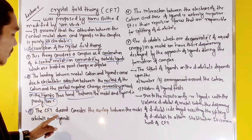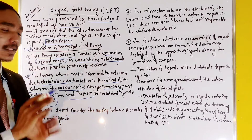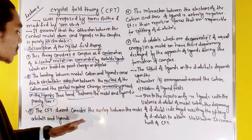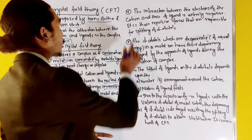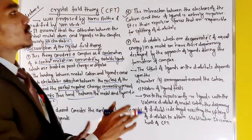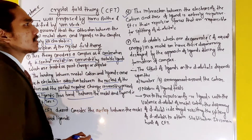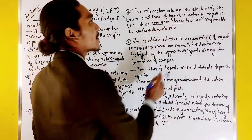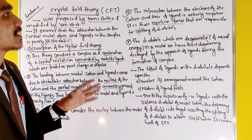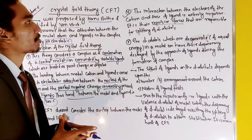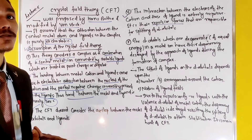Number 3: CFT does not consider any overlap between the metal orbital and the ligands — it does not consider any metal-ligand orbital overlap. Number 4: The interaction between the electrons of the cation and those of the ligands is entirely repulsive. It is this repulsive force that is responsible for the splitting of the d-orbitals.